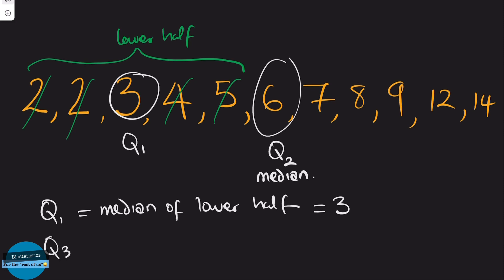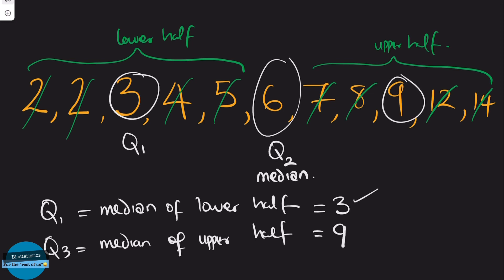So let's find Q3, which is the middle data point in the upper half of the data, or the median of the upper half. So we have 2 points here and 2 points here, just like when we did Q1. And Q3 is going to be here. So our Q3 is 9 years. So our Q1 is 3 years, our Q2 is 6 years, and our Q3 is 9 years.